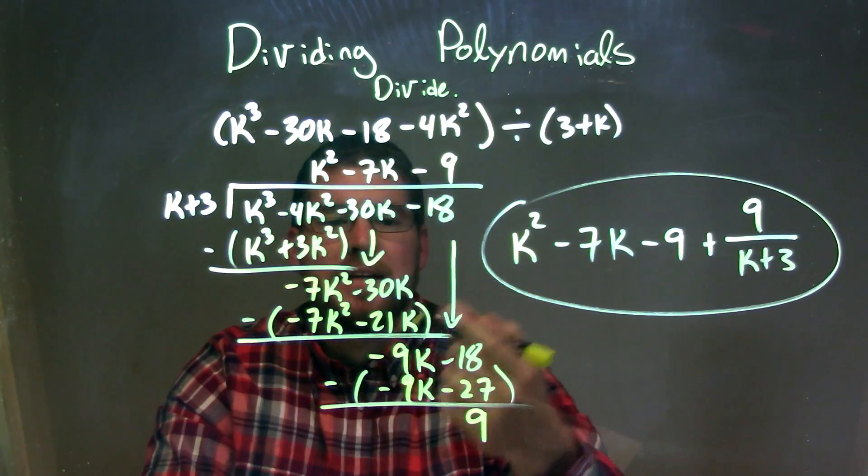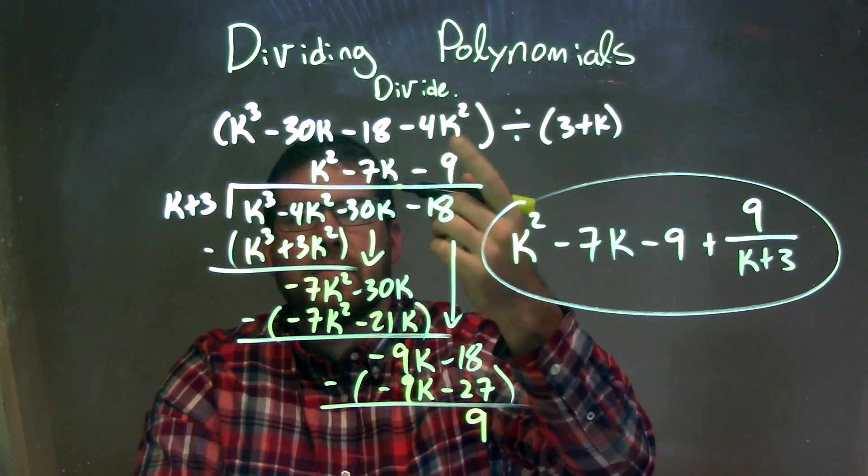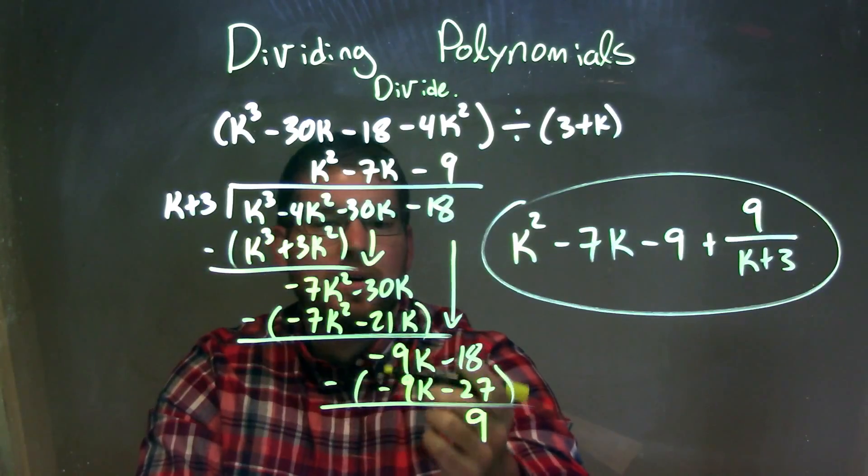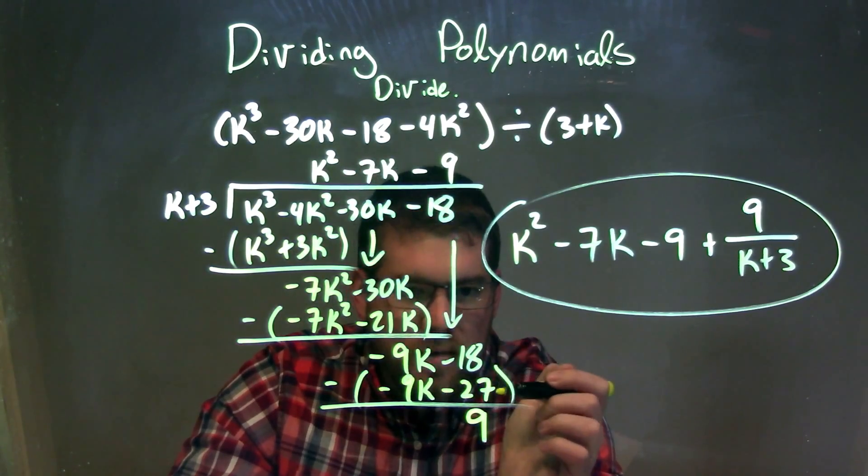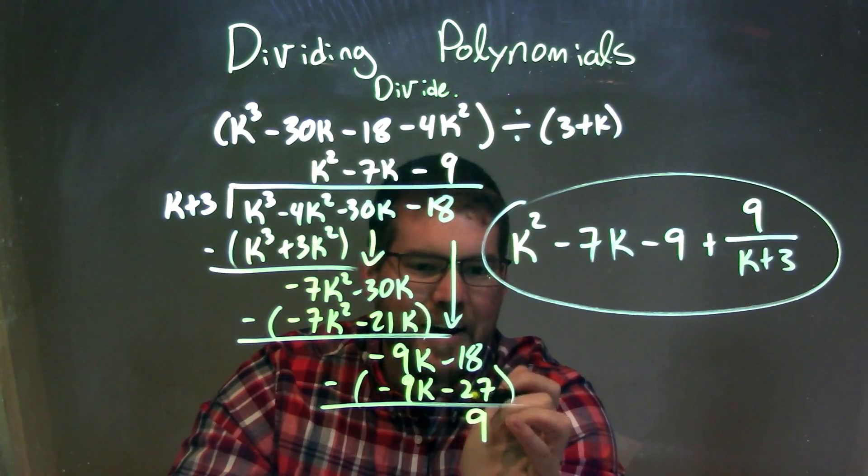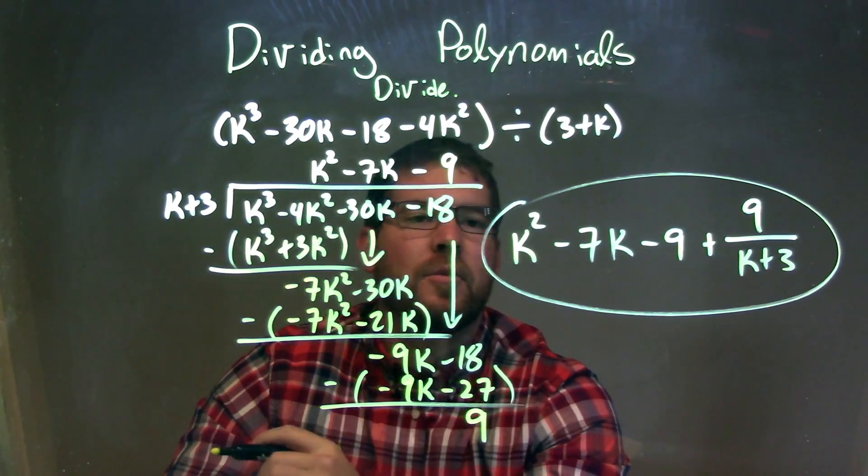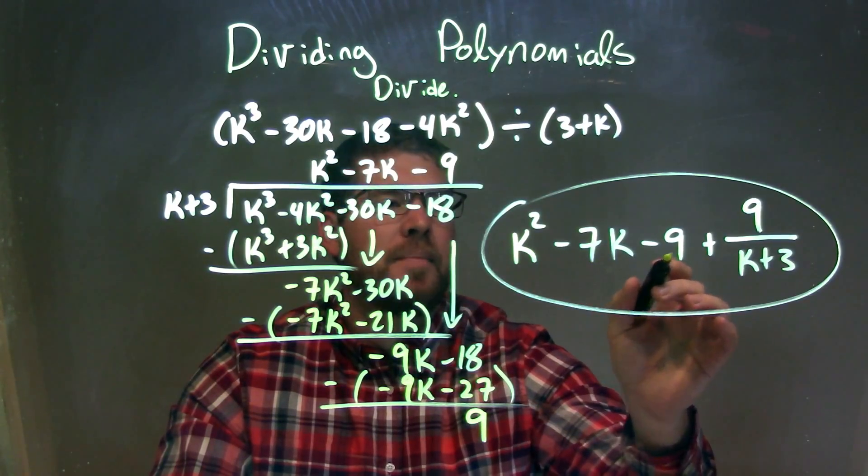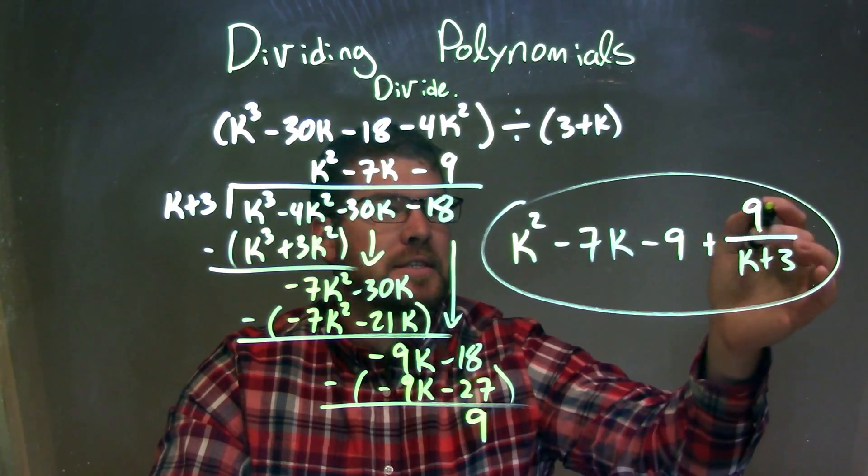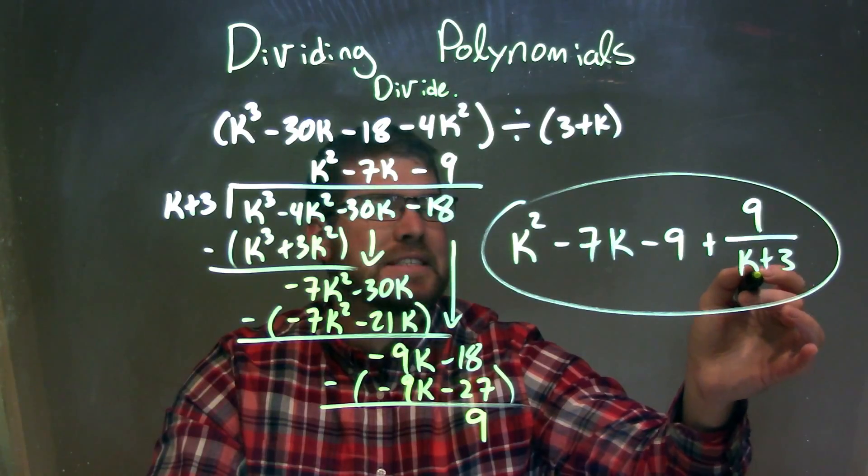What times k gave me a minus 9k? Well, that's negative 9. Negative 9 times what's over here, k plus 3, gave me a minus 9k minus 27. Subtracted the two, gave me a positive 9. That's my remainder. And so my final answer is what's written up here, which is that k squared minus 7k minus 9, plus this remainder, which is 9, divided by the divisor, which was k plus 3.